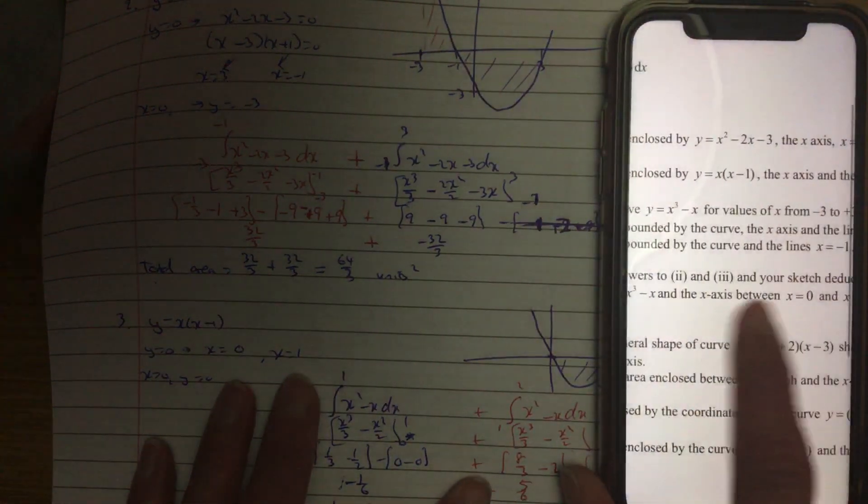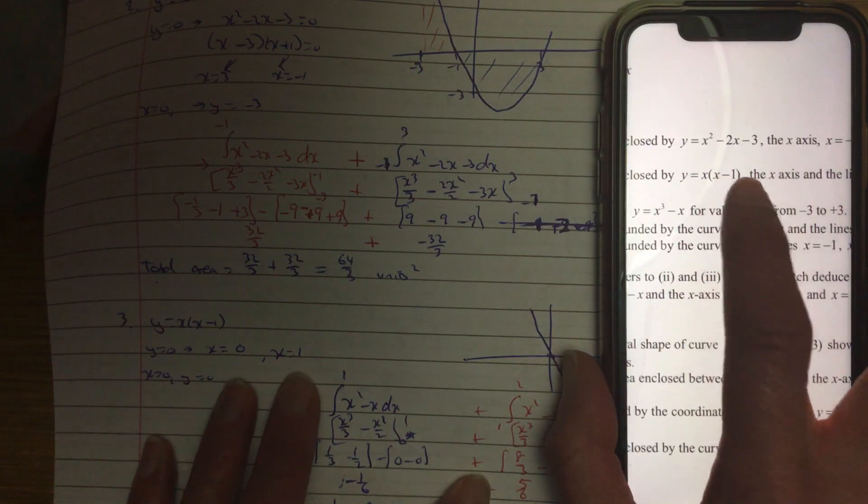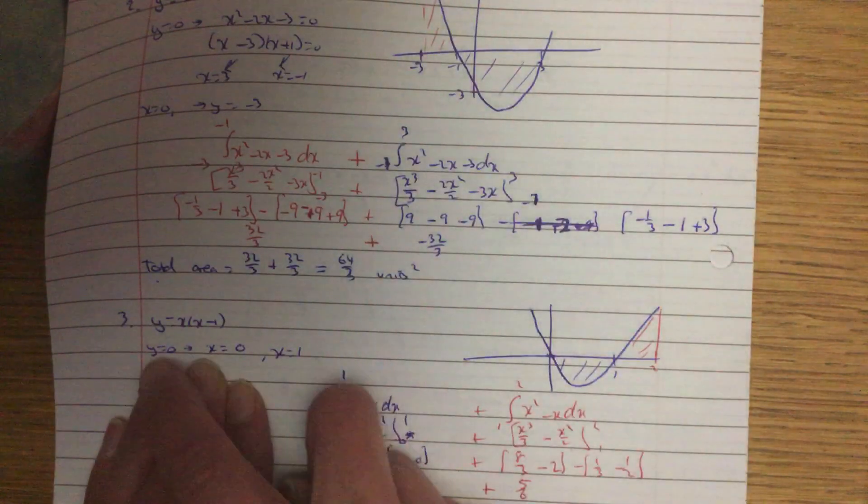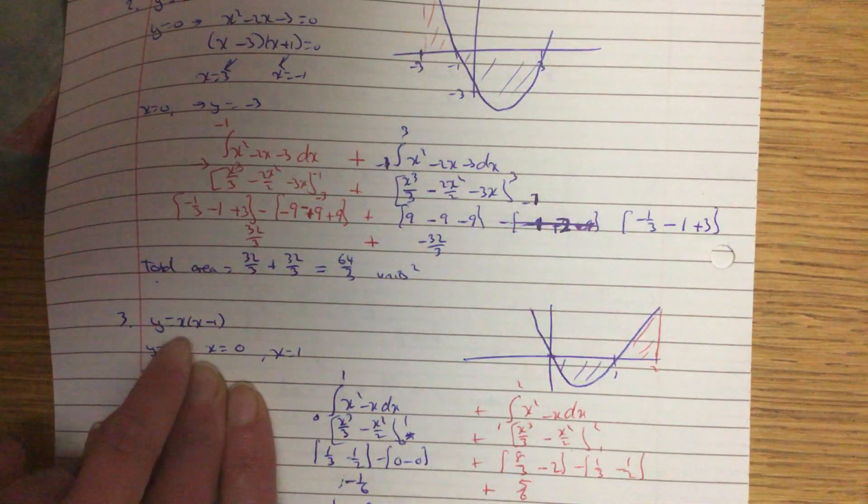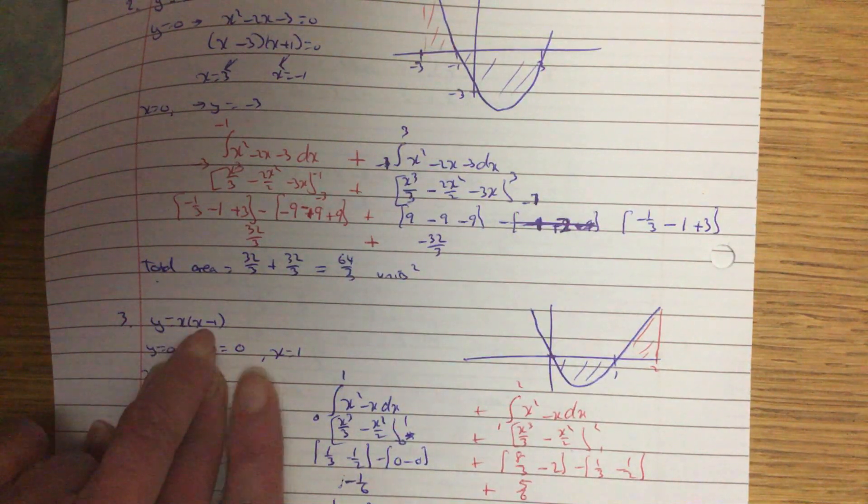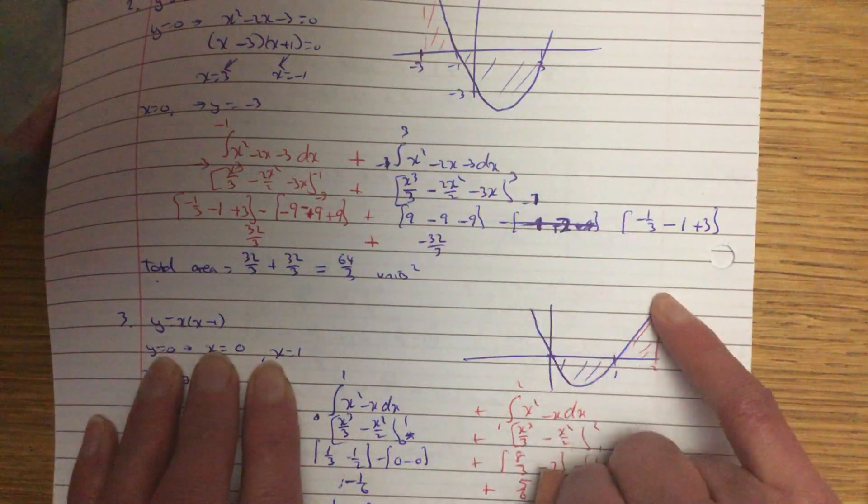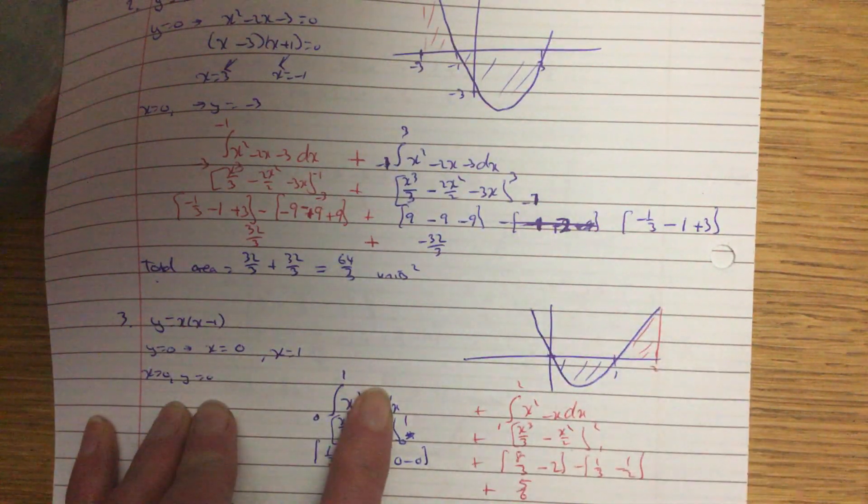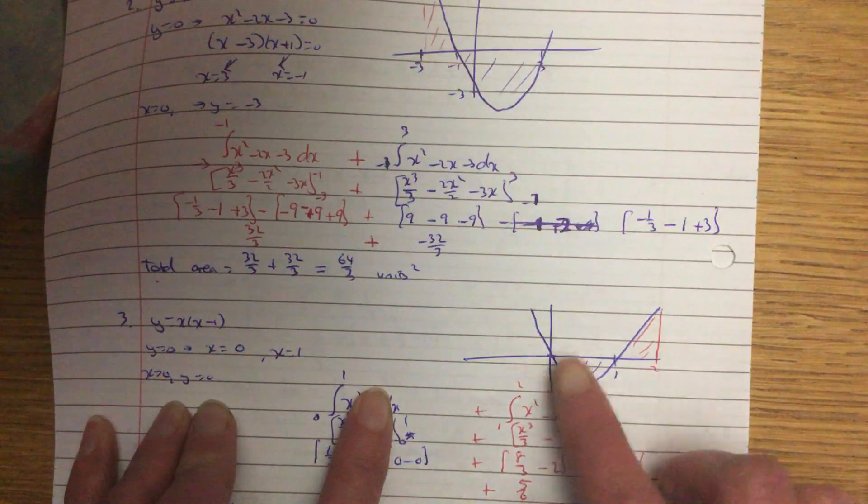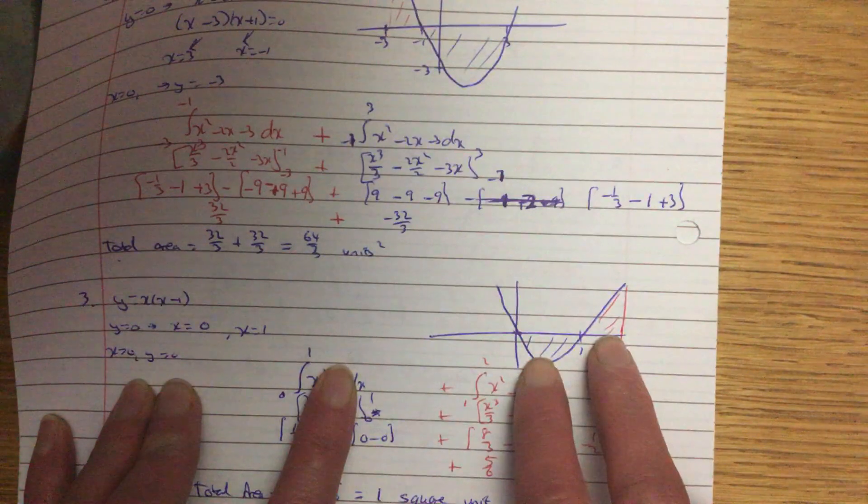We'll see another one just like that on number 3. So it's y equals x, x minus 1. So you can see this as normal. Put x equals 0. So, sorry, put y equals 0, so x is 0, and x minus 1 is 0. So x is 0, and x is 1. It's a positive. There we go. And you're told you are between the lines, the x axis and the line x equals 2. So there's x equals 2. So two distinct areas.